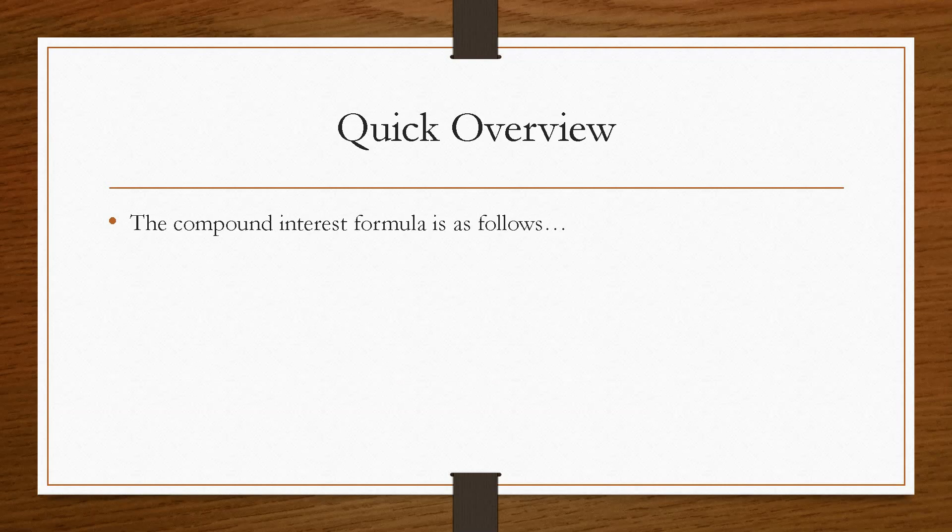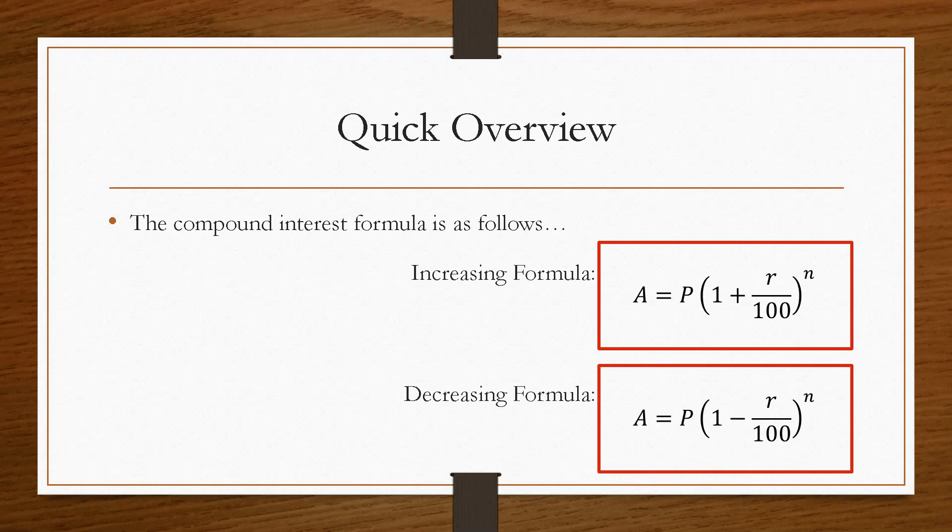Now the compound interest formula looks like this. We have the increasing formula and we have the decreasing formula. The only difference is the plus and the minus. Here we have the plus because we are increasing the value and the minus because we are decreasing the value.